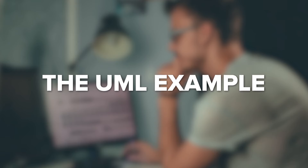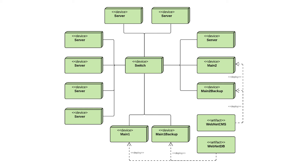The UML example: In this model, we use just two elements — Device, which is a meta class of the Node element, and Artifact, which depicts a piece of software in an infrastructure environment. We also use simple association and deployment relationships to connect elements together.